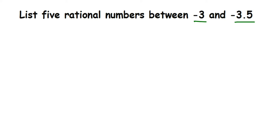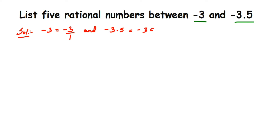Minus 3 and minus 3.5 are not in the form of rational numbers, so we're going to convert them first. Minus 3 can be written as minus 3 by 1, which is a rational form. Minus 3.5 can be written as minus 35 by 10 — we remove the decimal and place 10 in the denominator.